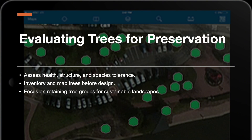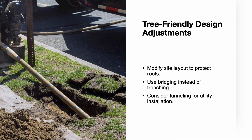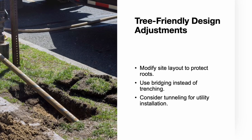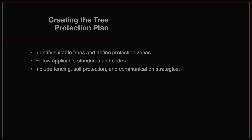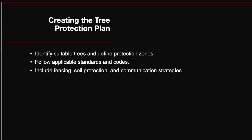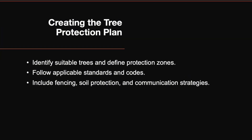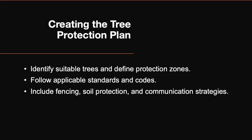Group retention is preferred. Clusters of trees provide better wind resistance and ecological value than isolated individuals. Sometimes even small design changes, like bridging over roots or tunneling for utility installation, can dramatically improve survival rates. Once preservation decisions are made, the arborist develops a tree protection plan. This could include fencing, soil protection, and clear communication to everyone on site. Compliance with local regulations is key.